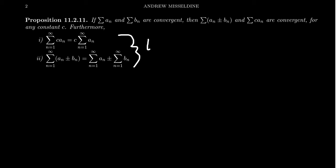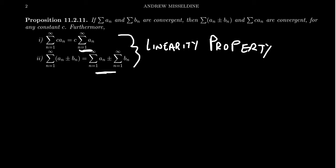This is commonly referred to as the linearity property of series, and it's a property we've seen many times in previous calculus settings. Limits have this linearity property — the sum of limits is a limit of sums. It turns out that derivatives were linear, anti-derivatives were linear, integrals both definite and indefinite. Finite sums are linear, and now we see that infinite sums — aka a series — are likewise linear operations.